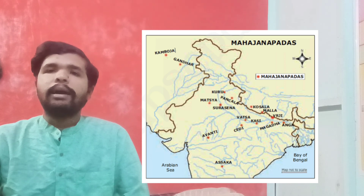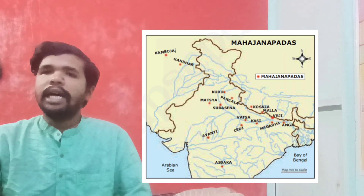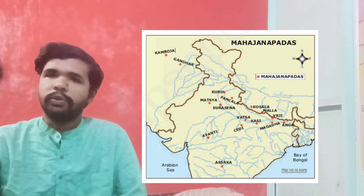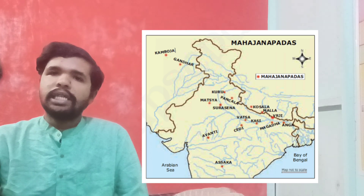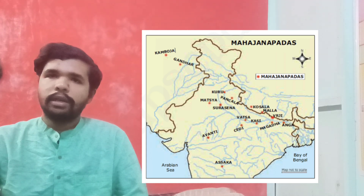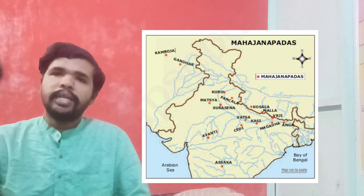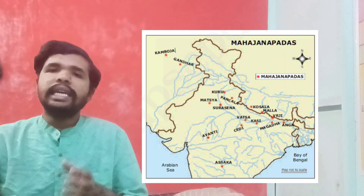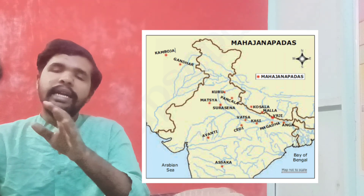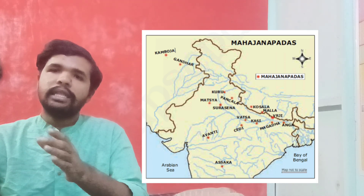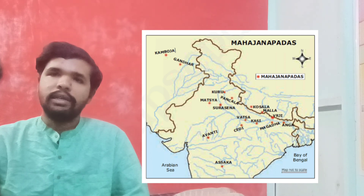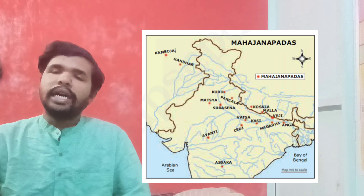Panchala is one of the important Mahajanapadas. The next is Surasena, with Mathura as its capital. The next is Avanti. Avanti is located near the Vindhya mountains and is divided into two parts — Northern Avanti and Southern Avanti. The Northern Avanti capital is Ujjain, and the Southern Avanti capital is Mahishmati.